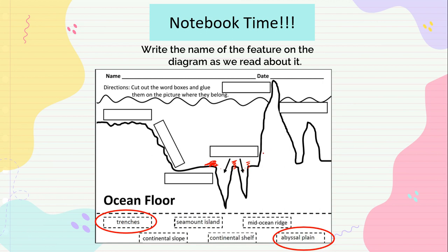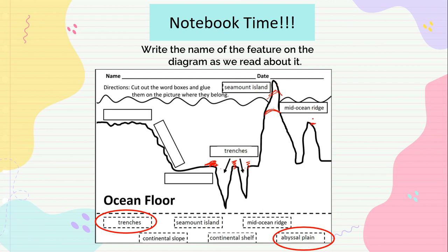The deepest part under the sea is called the trench. A seamount is like an underwater mountain — if it comes above the sea it becomes an island. If it were shorter, it would be our seamount.